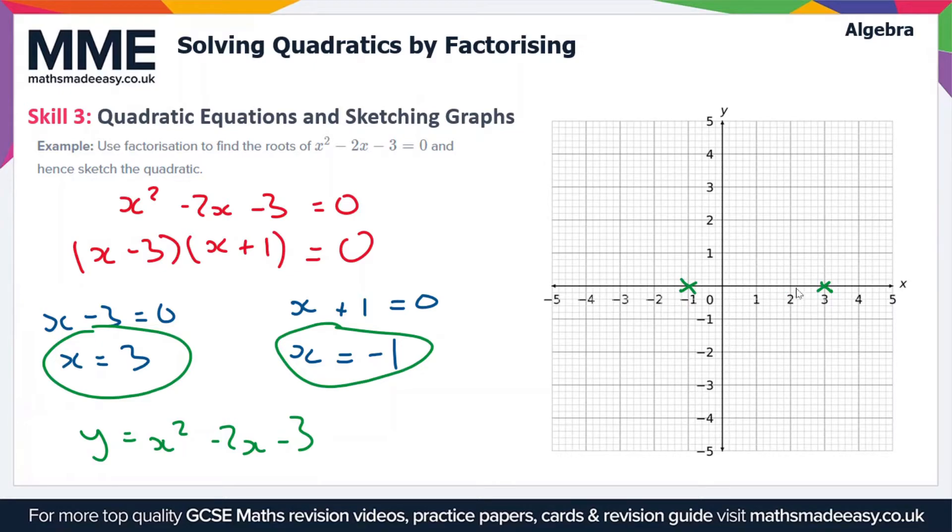Then the other thing we have to note is where the graph crosses the y-axis. So this is when x equals 0. So if we set x equal to 0 in this equation down here, then we're left with y equals minus 3.